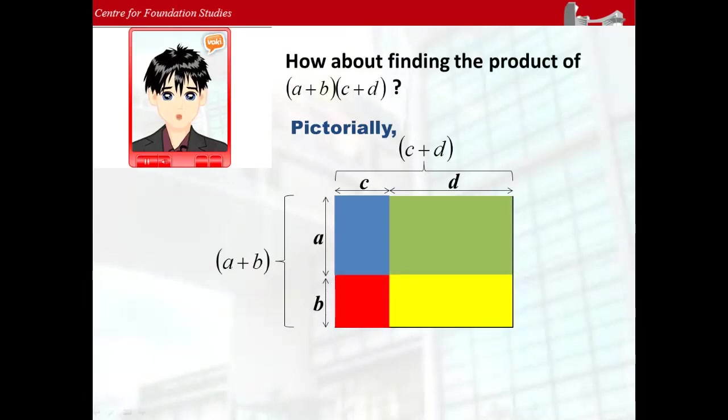The area of the blue rectangle, green rectangle, yellow rectangle and red rectangle is ac unit square, ad unit square, bd unit square and bc unit square respectively.